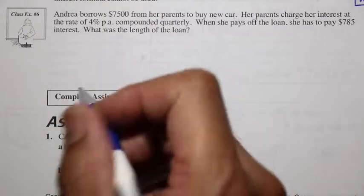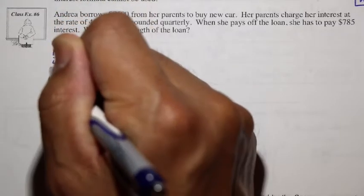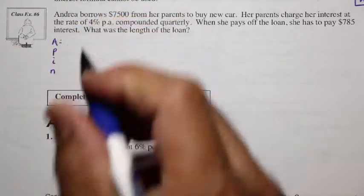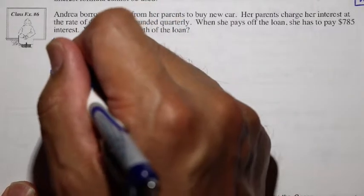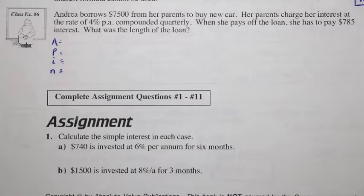Well, here let's set it up again. Here we have A equaling something. P, these are the important pieces of that compound interest formula. And let's see if we can find in the question some important pieces of information.